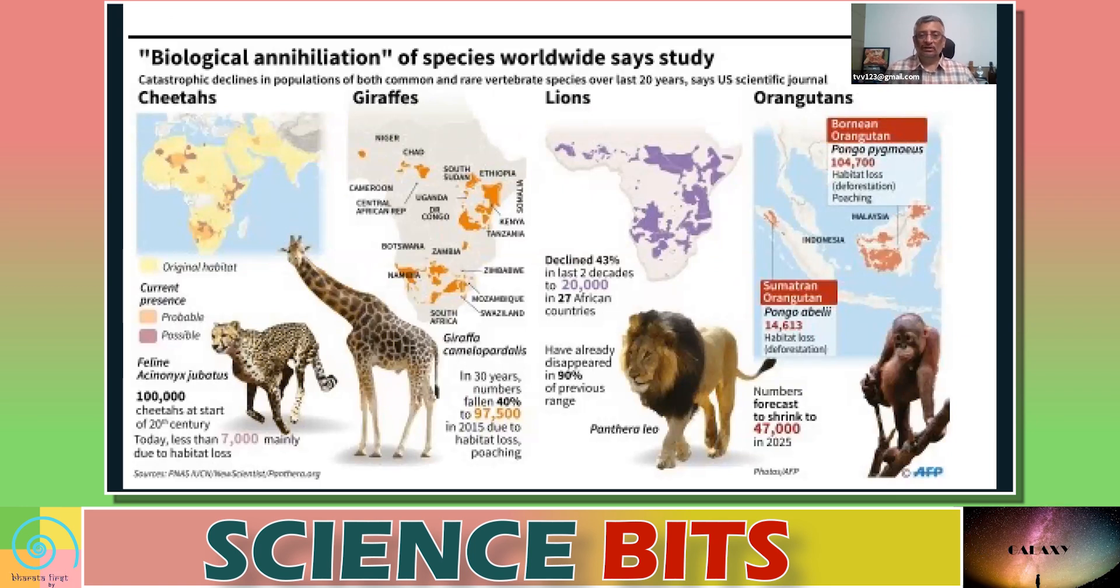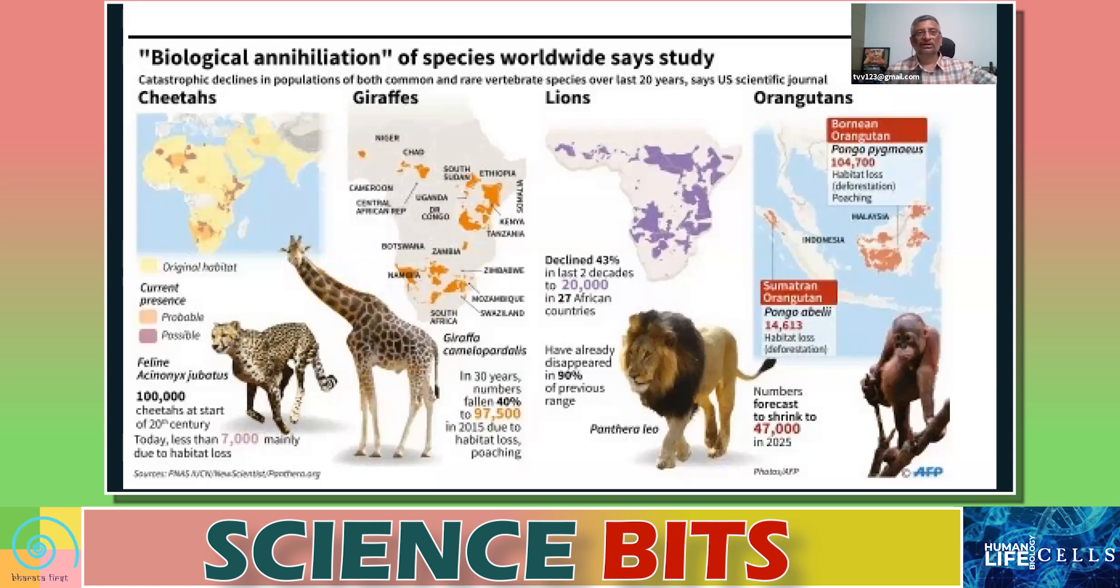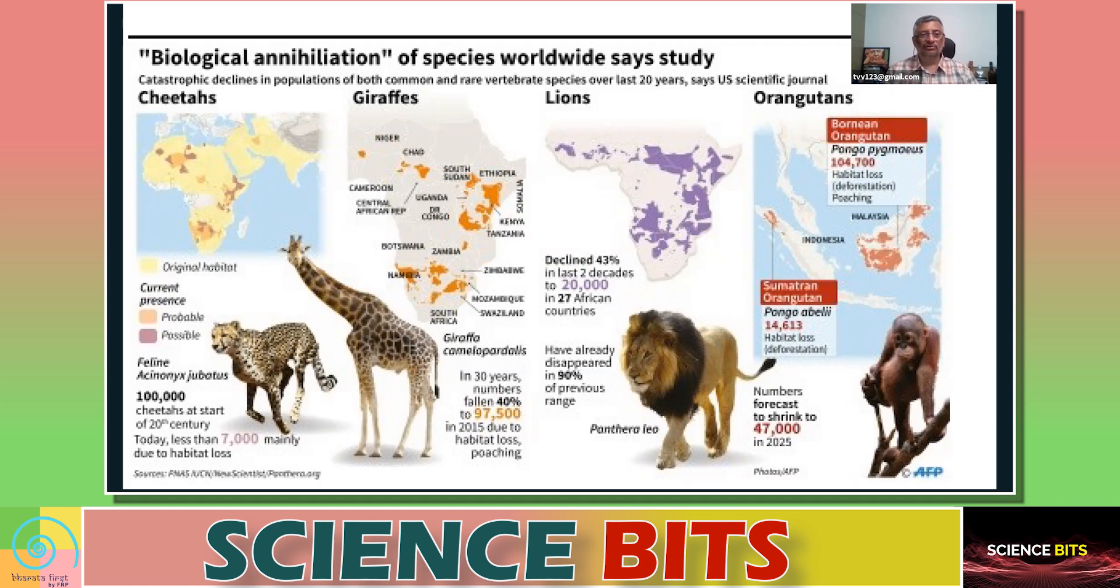So if you look at the biological species, we know that cheetahs were extinct around one lakh years ago, giraffes are becoming extinct, lions are getting extinct, orangutans are getting extinct around us. So there is a biological annihilation because we are encroaching upon forest spaces.